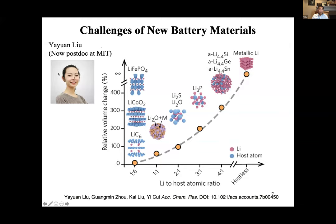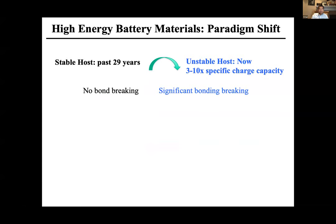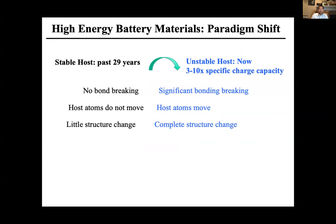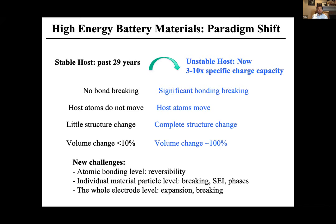This is a really big challenge. The change is simply too big in volume and structure. If you compare the new materials, with lithium and electrons coming in causing chemical bond breaking, atoms of host material move very long distances — complete structure change, huge volume expansion — we're talking about 10 times or more compared to the previous generation of intercalation materials. These are the challenges for the whole materials community to come up with solutions.